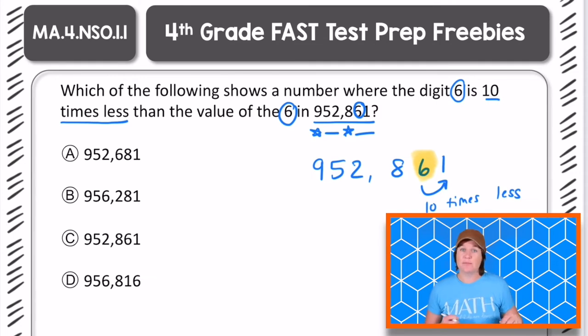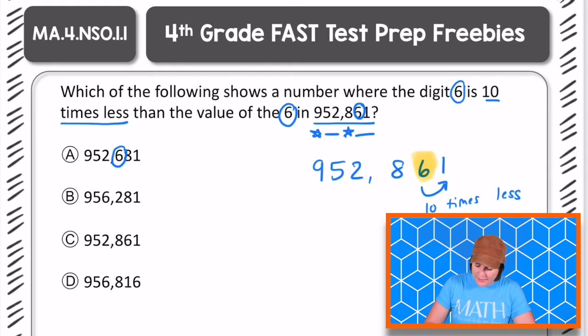Okay. And of course, if we wanted to make it 10 times greater, we would go the other way. But this problem is saying which one is 10 times less. So we're looking for the answer choice that has the 6 in the 1s place. Okay. So for choice A, we have 952,681. All we're really paying attention to is where is that 6 located? And here, it's located in the 100s place. But our mission is to find the number that has the 6 in the 1s place. Therefore, we can eliminate A.